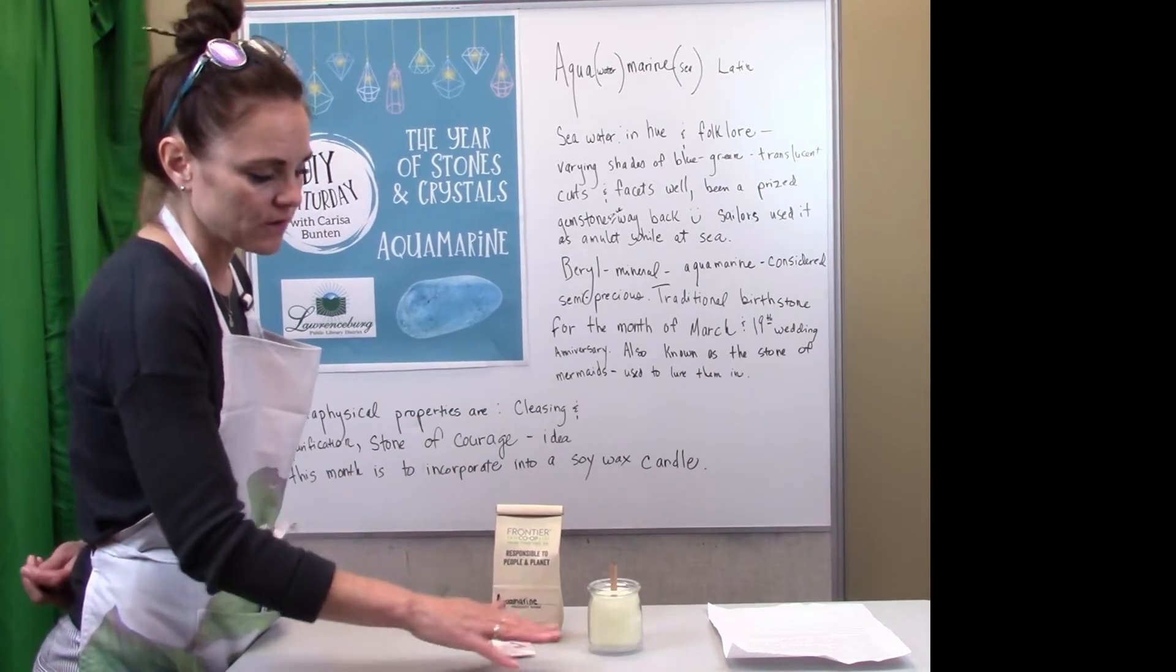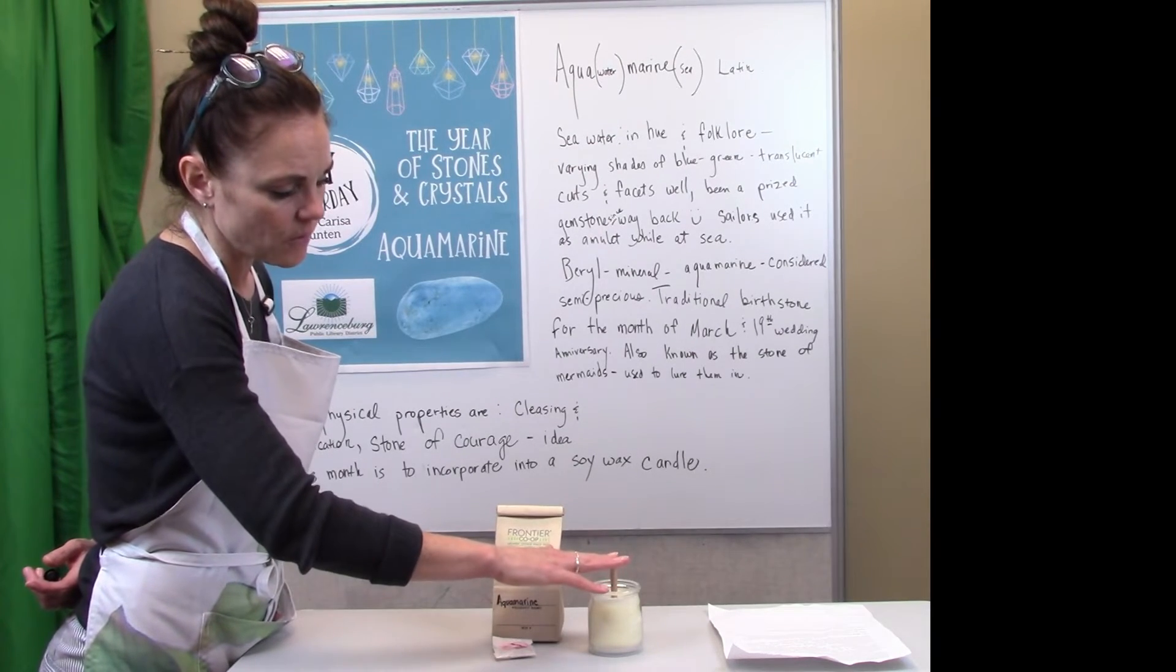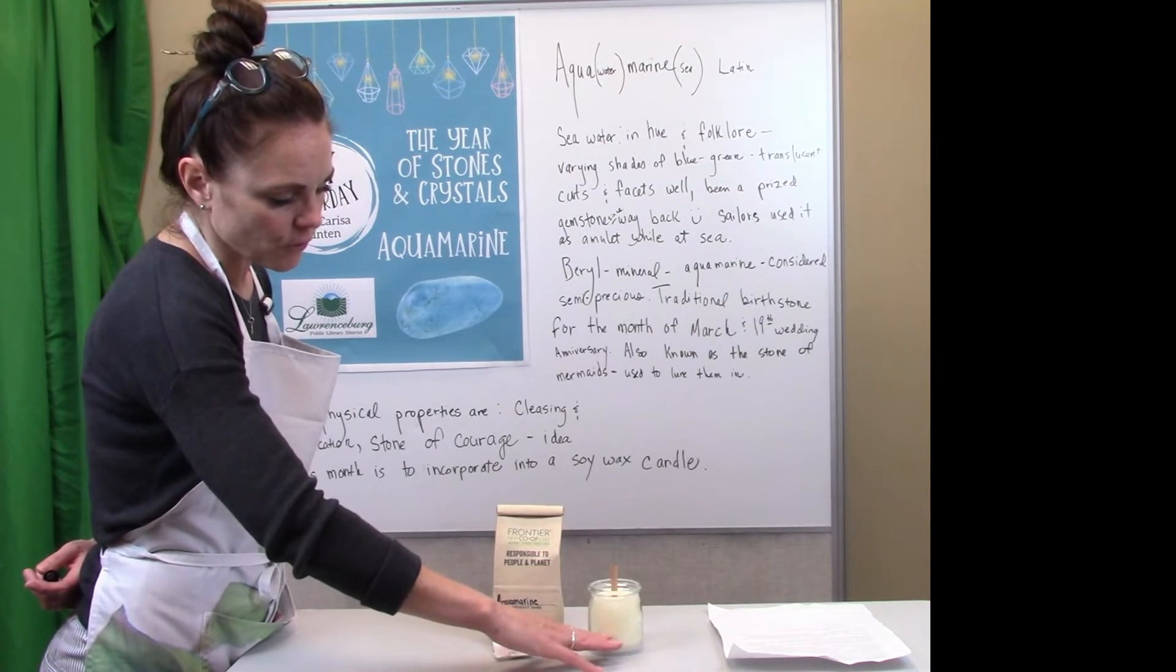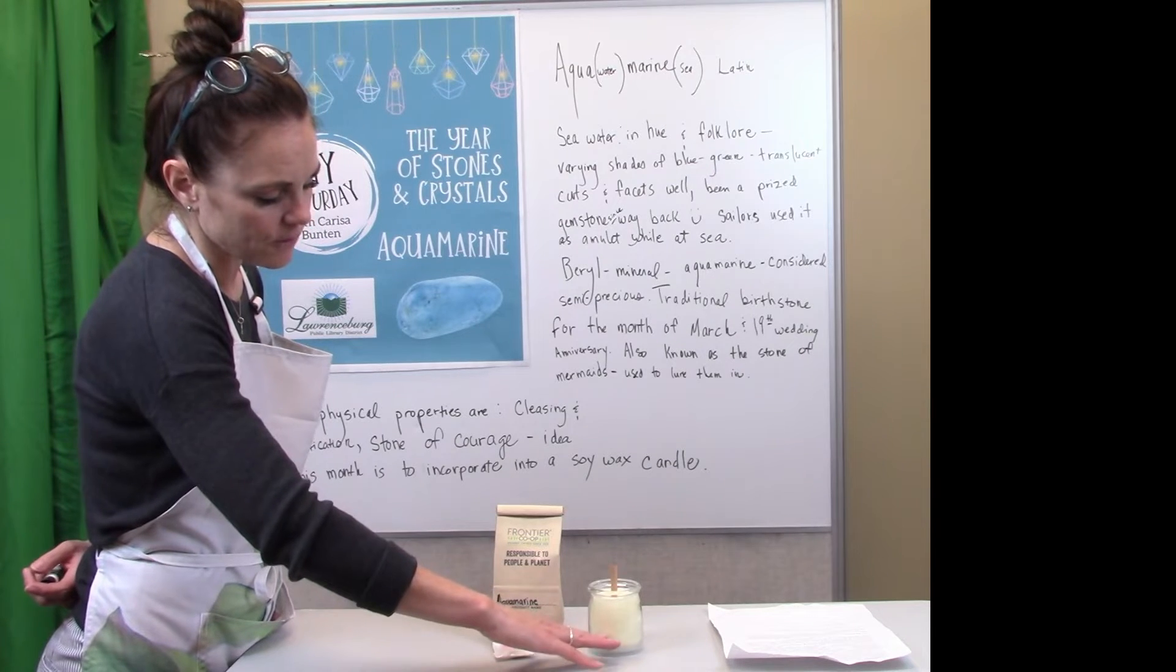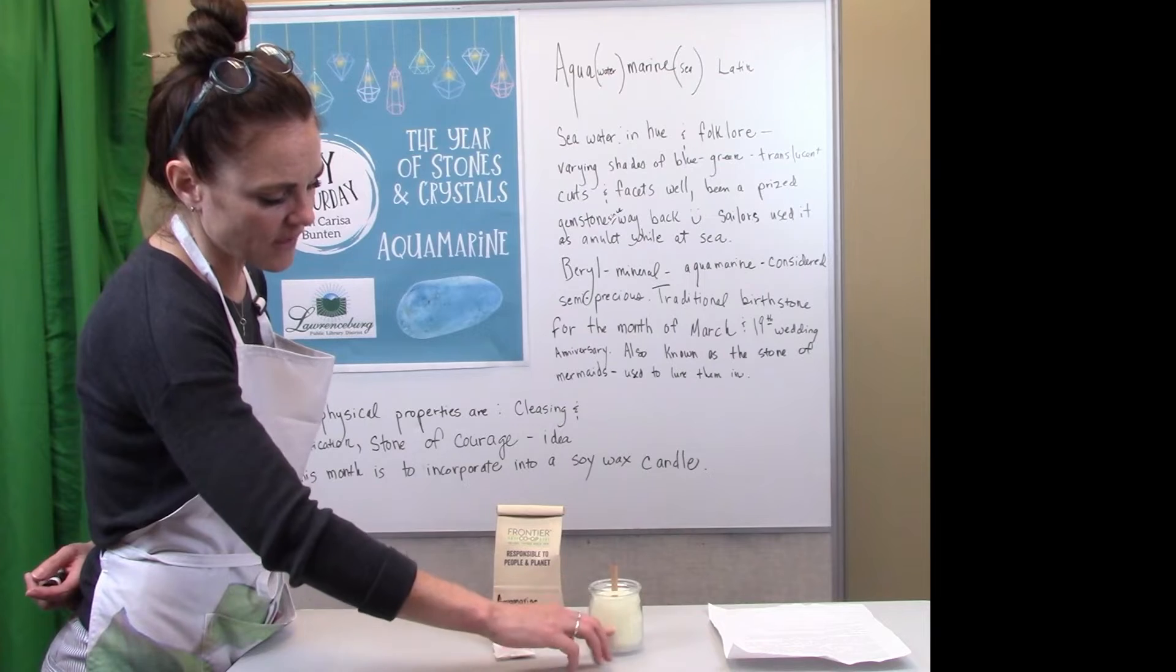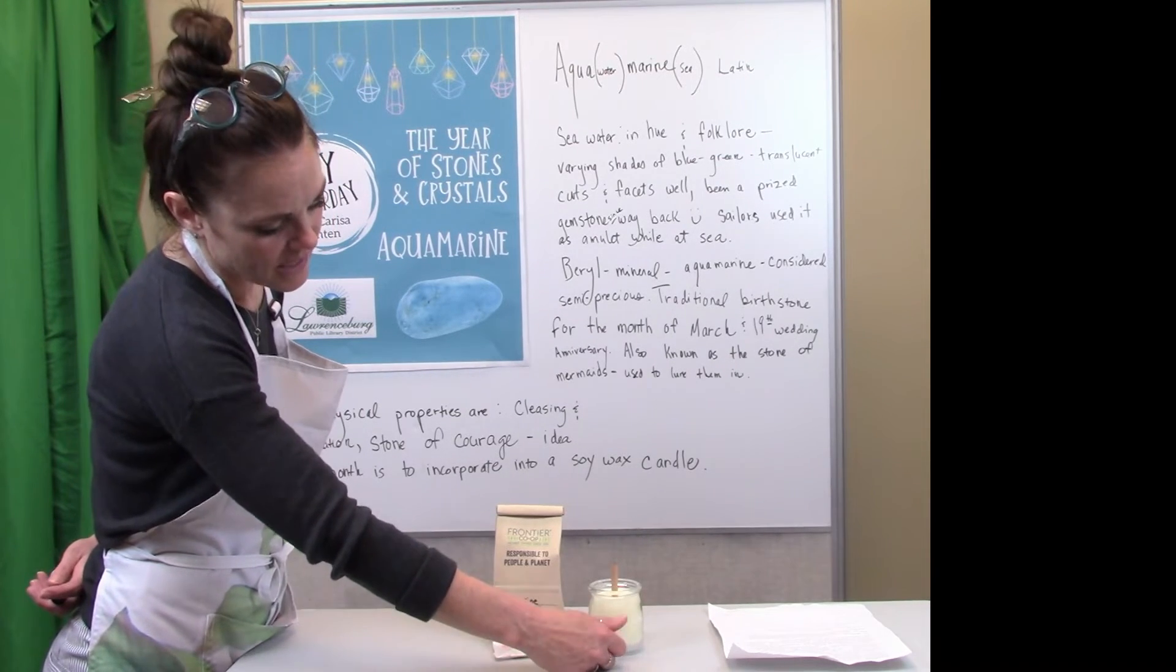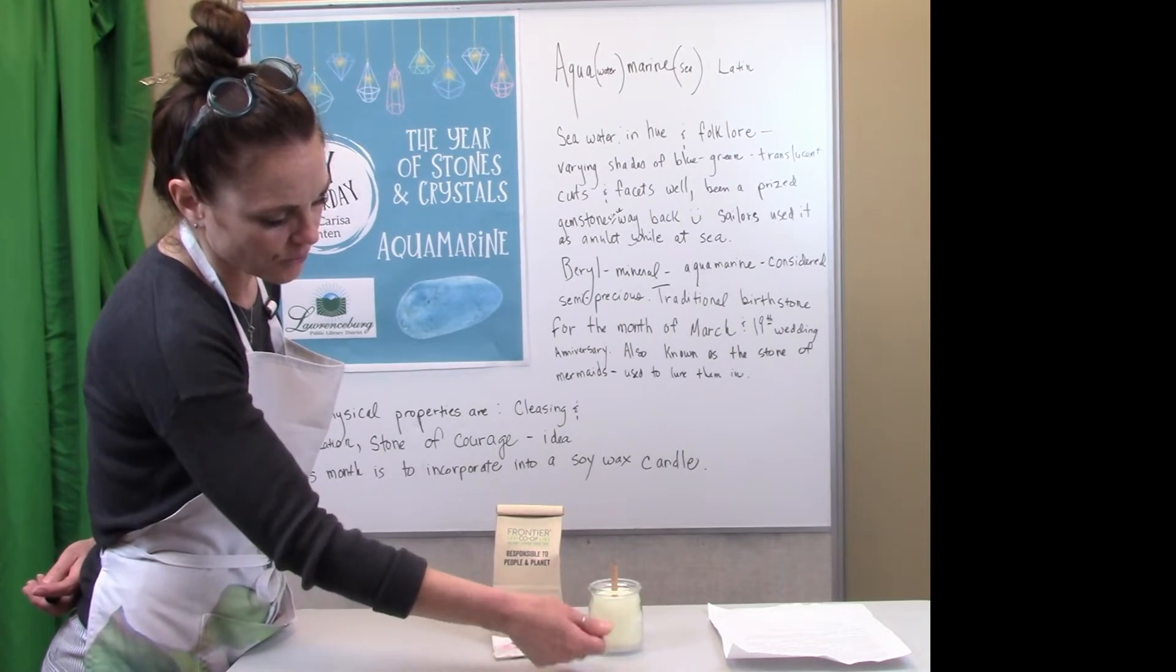So when you use your soy candle and then you've got your cool stone crystal or mineral embedded in there, as the soy wax cleans and dissipates into the air and burns down, you have like a little treasure trinket or gift left behind. And in this case it would be the aquamarine.